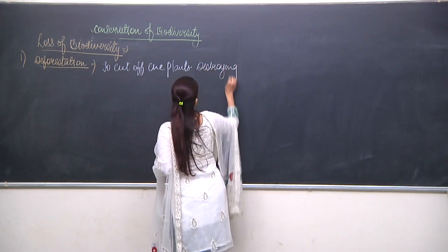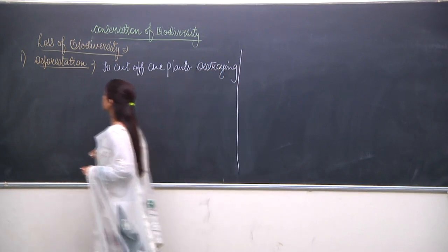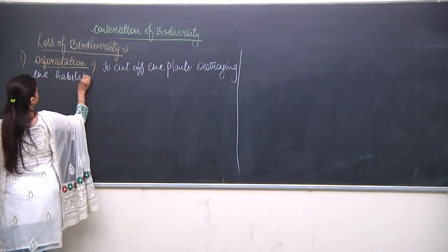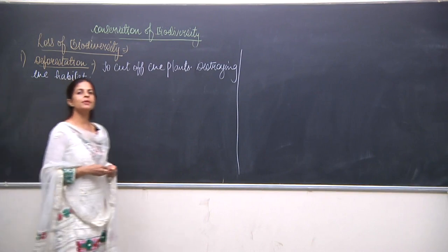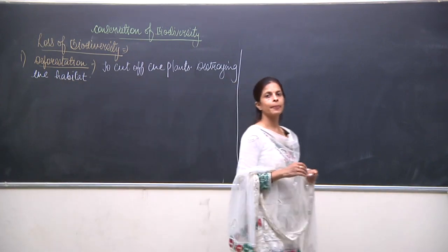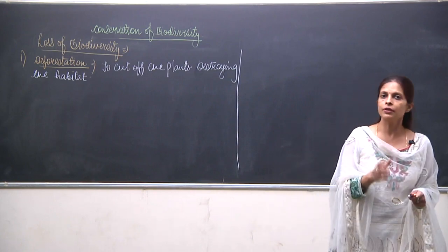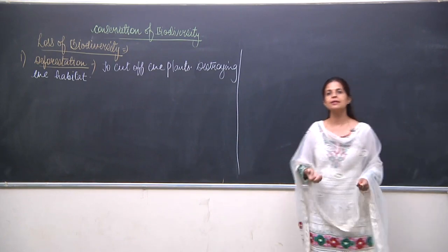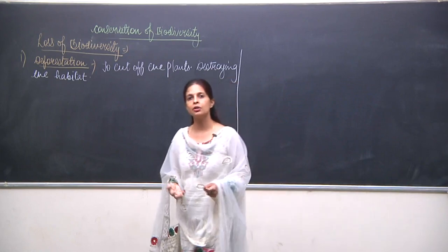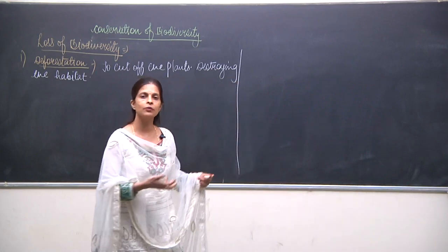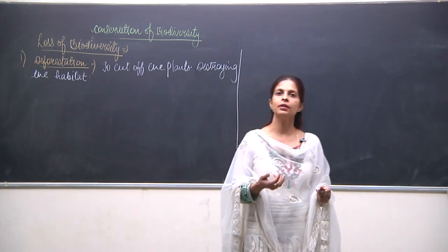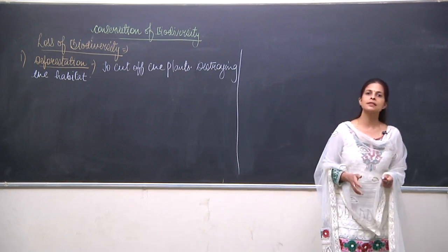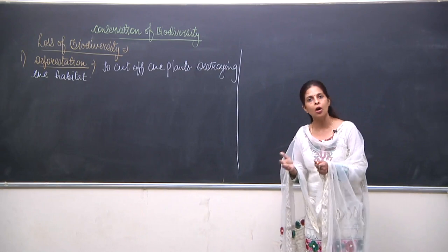Habitat means where the organism lives — the surroundings of the organism. The water is the habitat of the fish. Desert is the habitat of the camel. Snow is the habitat of the polar bear. So the place where the organism lives is the habitat of that particular organism.